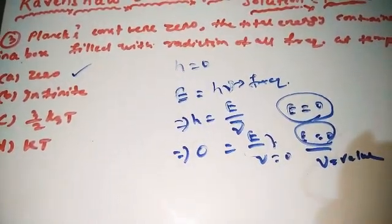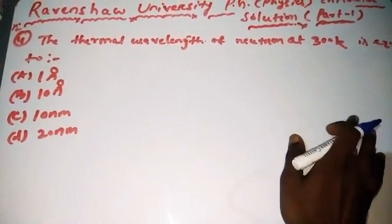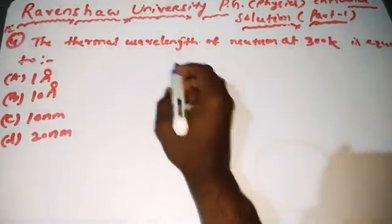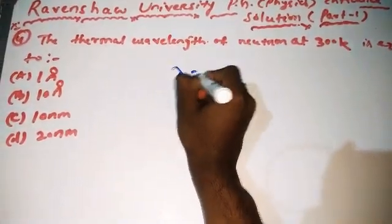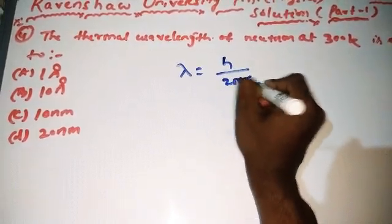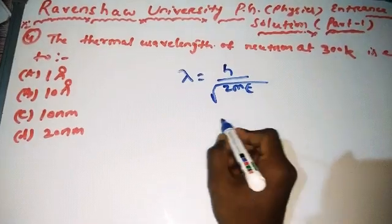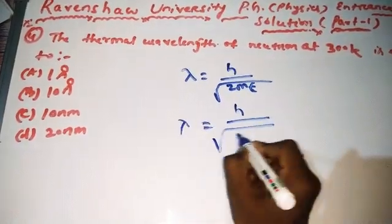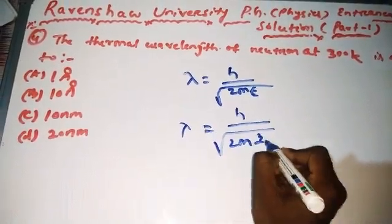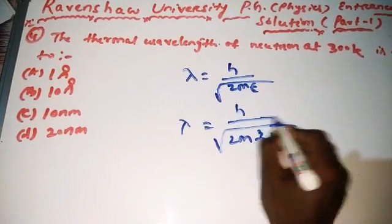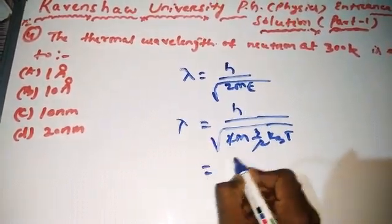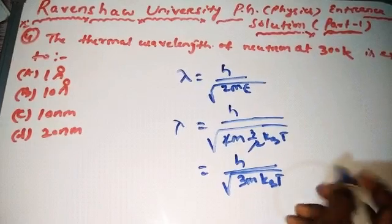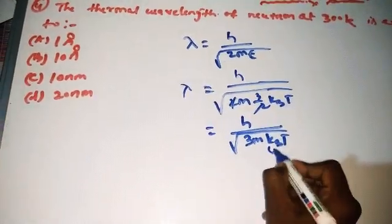Next question: thermal de Broglie wavelength of a neutron at 300 Kelvin. The thermal wavelength formula is λ = h / √(3m·k_B·T), where k_B is Boltzmann's constant.